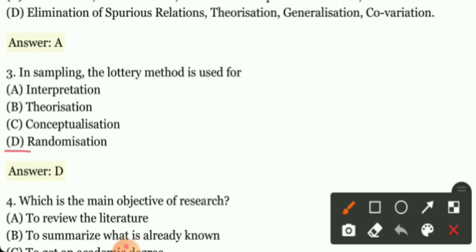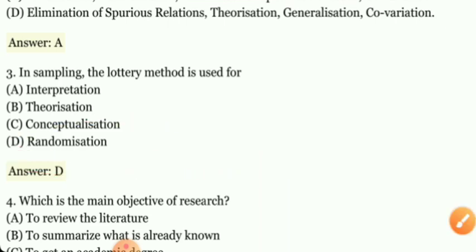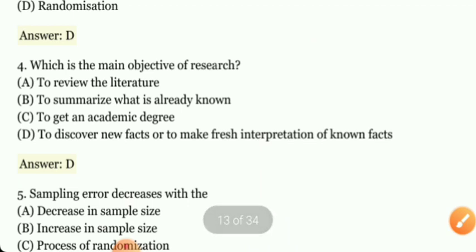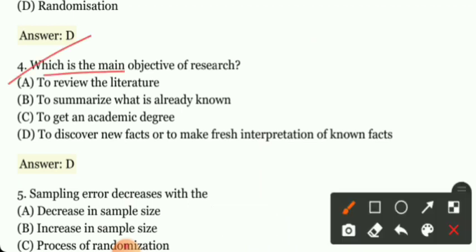So what do you say? The lottery method is used for randomization. Next question, Question 4: Which is the main objective of research? A) To review the literature, B) To summarize what is already known, C) To get an academic degree, D) To discover new facts or to make fresh interpretation of known facts.